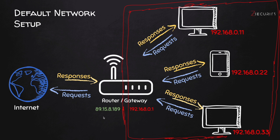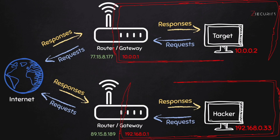Therefore, outside of this network, even though it is this computer that requested google.com, Google can only see the public IP. Now, assuming you are a hacker running some kind of a service — like a web server, listening for incoming connections for a specific payload, or running BeEF XSS — whatever it is, it's going to be running on your private IP. And as I said, this private IP is only visible within this network. Therefore, your target will not be able to access your server because this IP is not visible outside of your network.